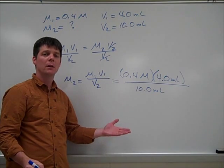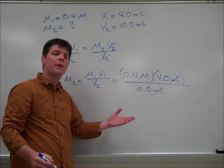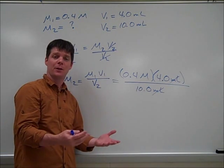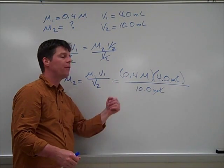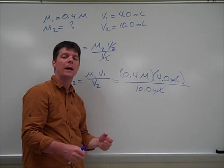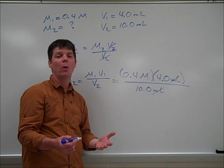We can see that units of milliliters is going to cancel here and here. We'll be left with units of molarity, and this is a good thing because that's what we're trying to find, a unit of concentration. So we can take 0.4 multiplied by 4 and divide by 10, and this will allow us to calculate a molarity of 0.16 molar.